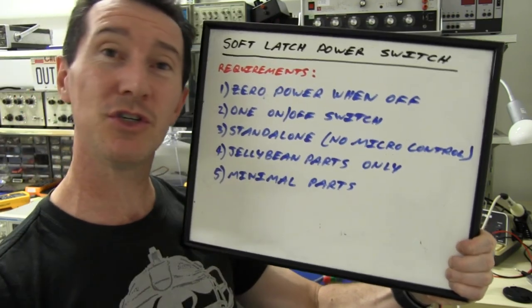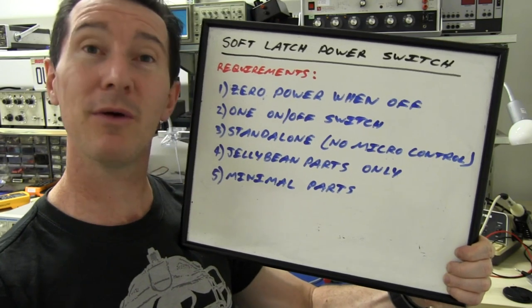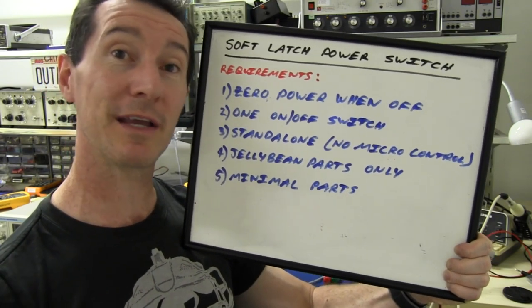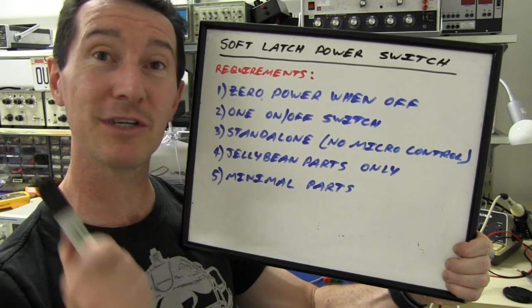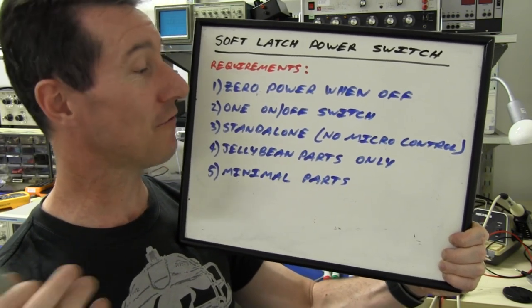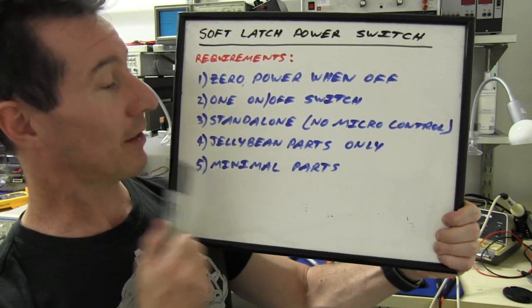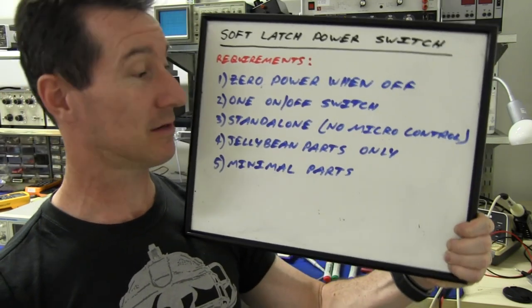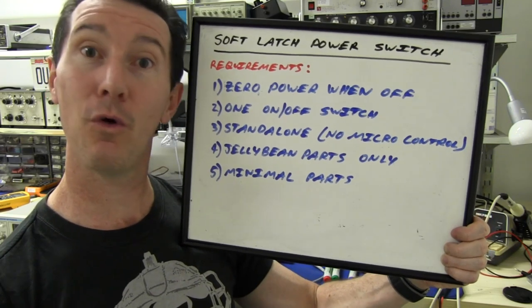Number four, I want it to use jellybean parts only. We don't want to use specific or dedicated chips. Hard to get parts. So we're talking basic transistors, resistors, caps, diodes, that sort of stuff only. And we want it to have a minimal number of parts. Because we want to be elegant, don't we? Always.